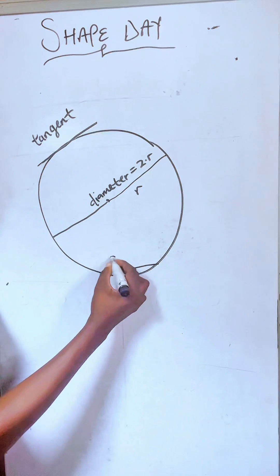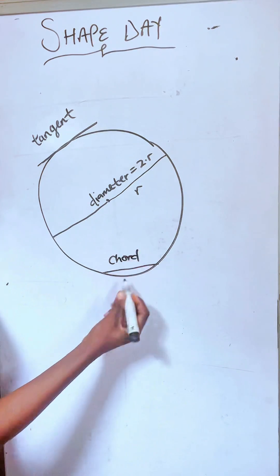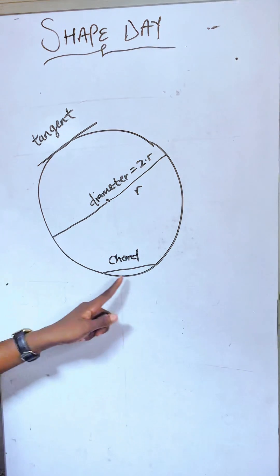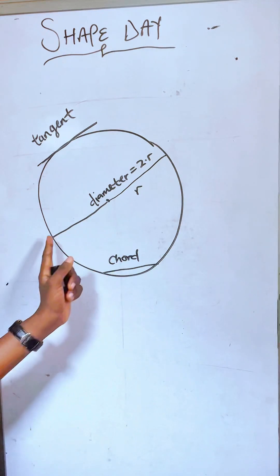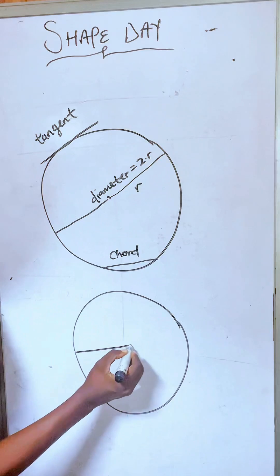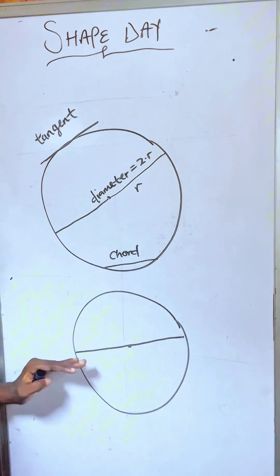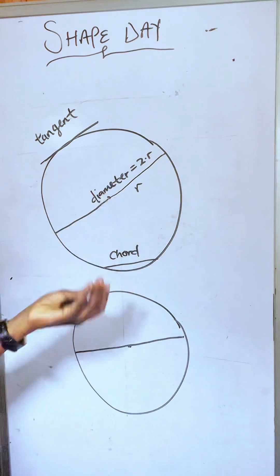So another part of the circle called a chord. A chord is a line from one point to another point in the circle, but it's not crossing the center of the circle. So your diameter can also be like this. Some people are wondering why is a diameter slanted?